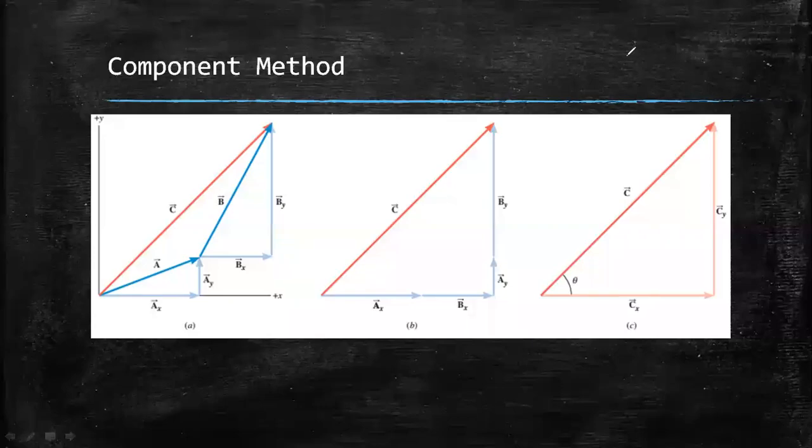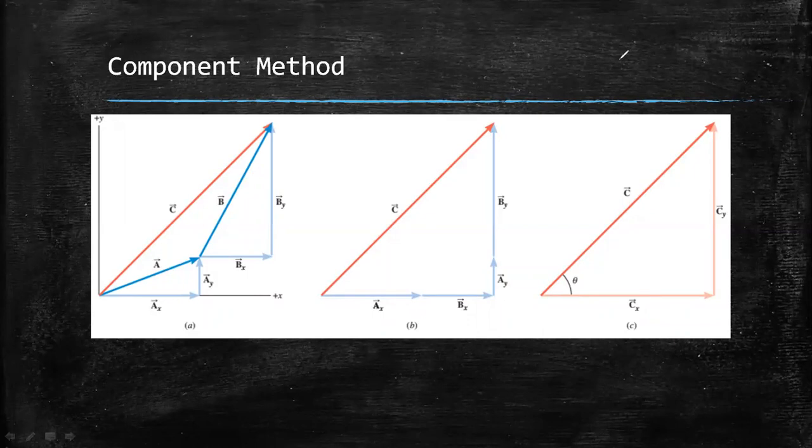The second method of vector addition and subtraction is the component method. Earlier, we discussed component vectors, which is essential in doing the component method.